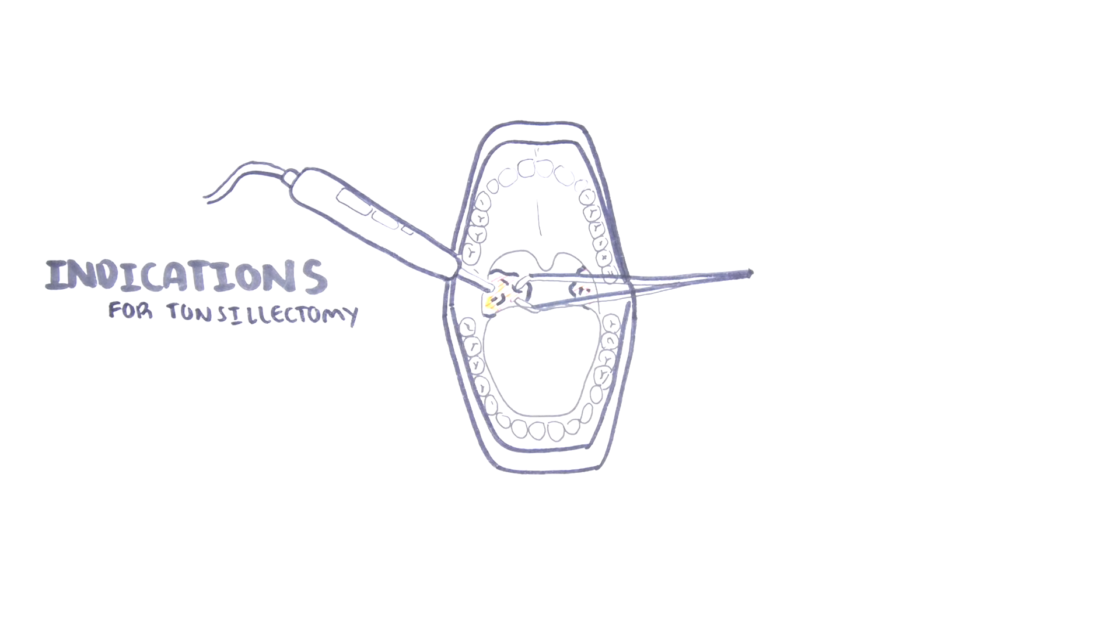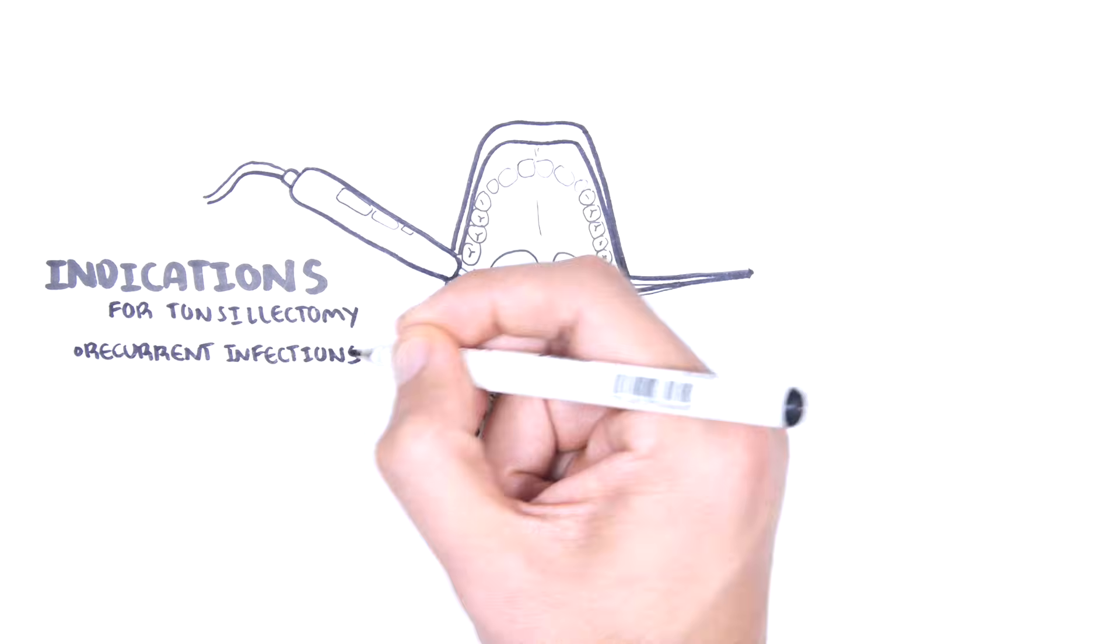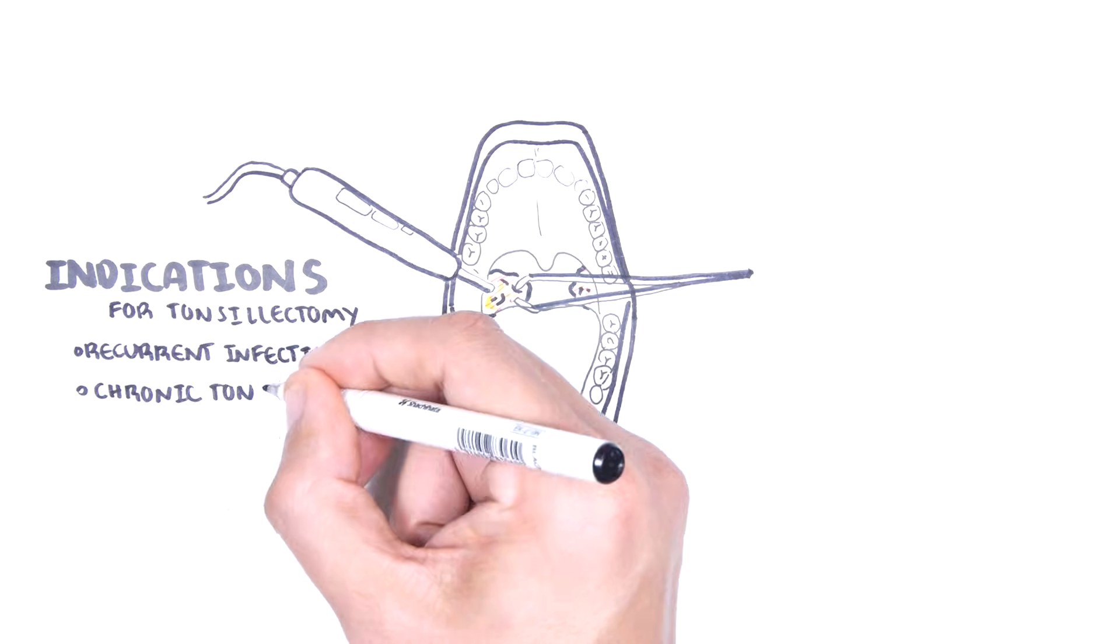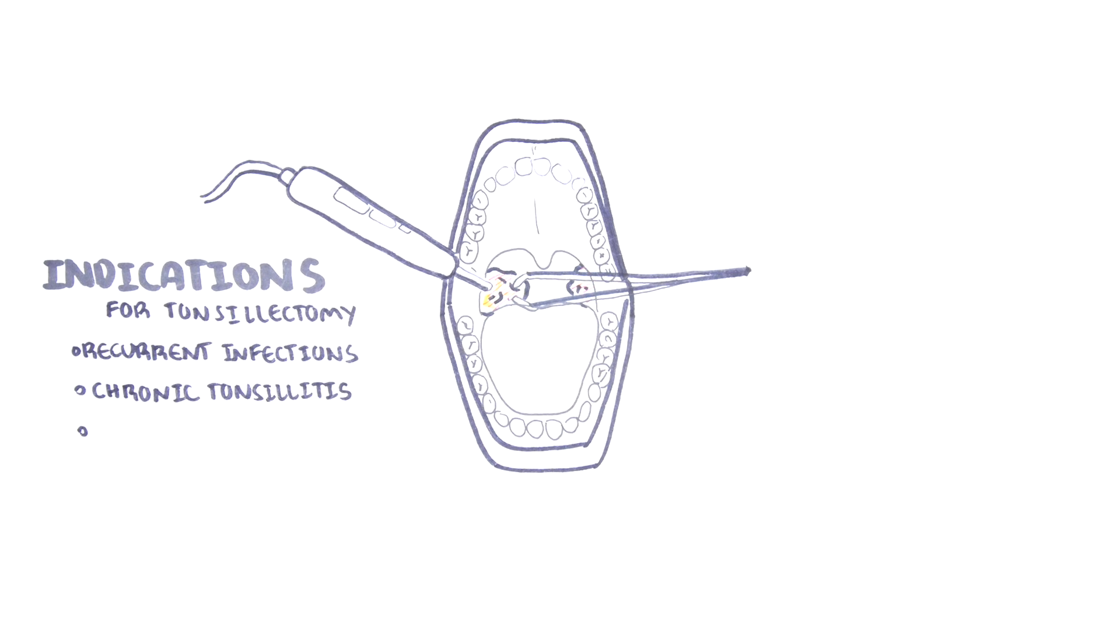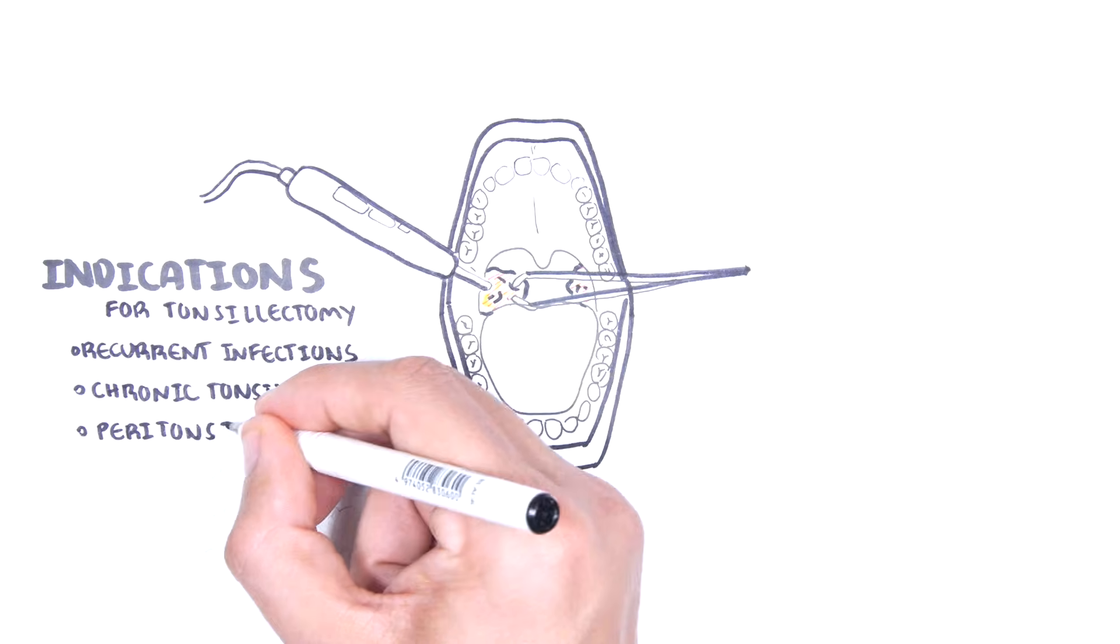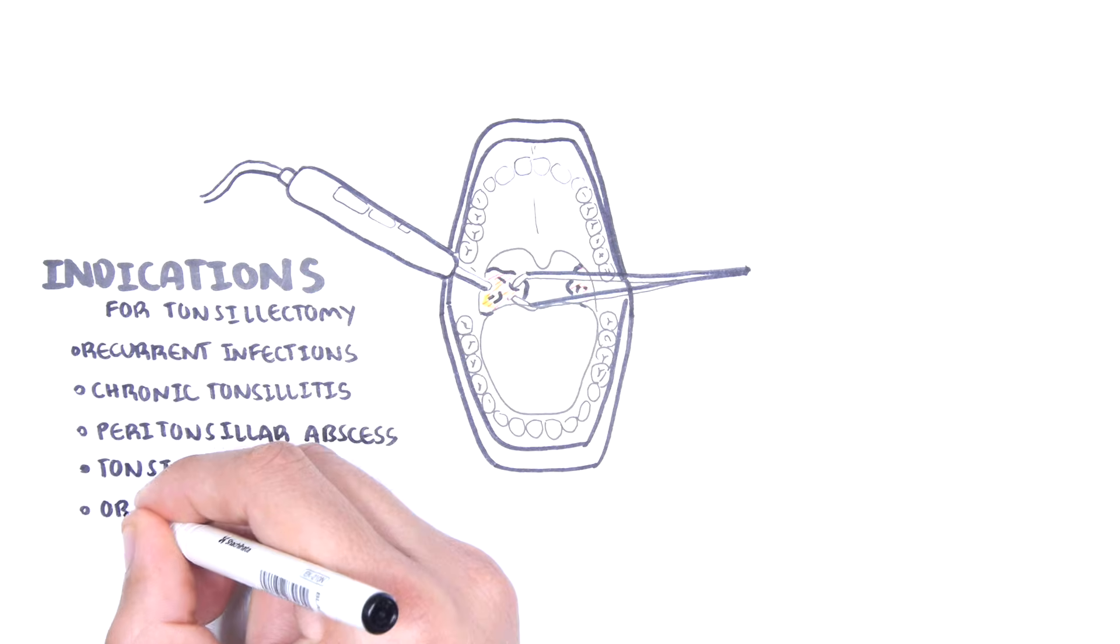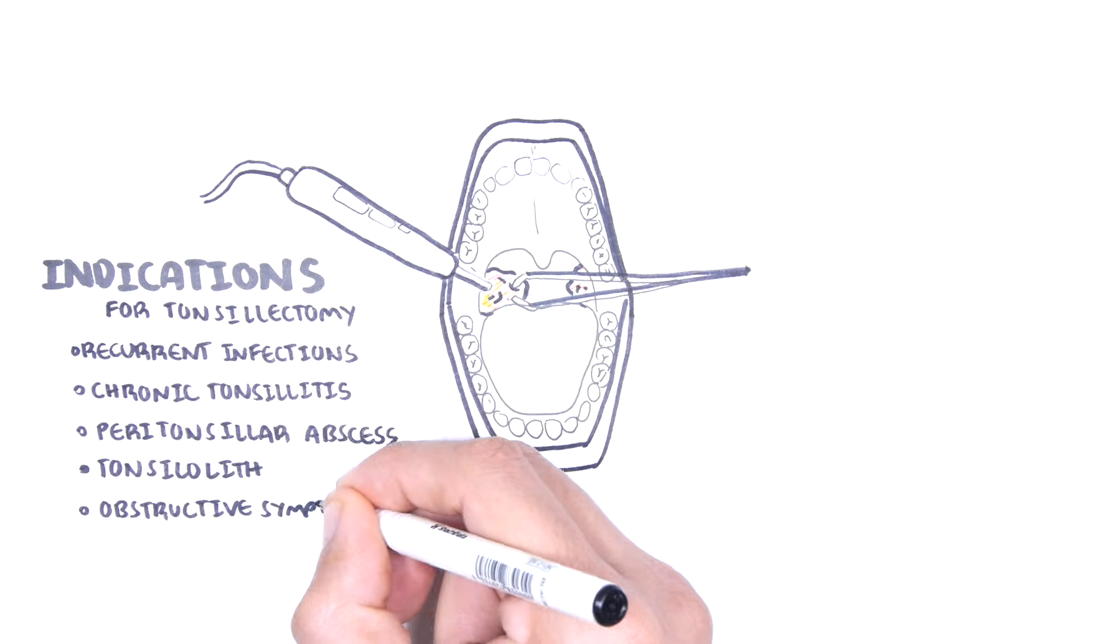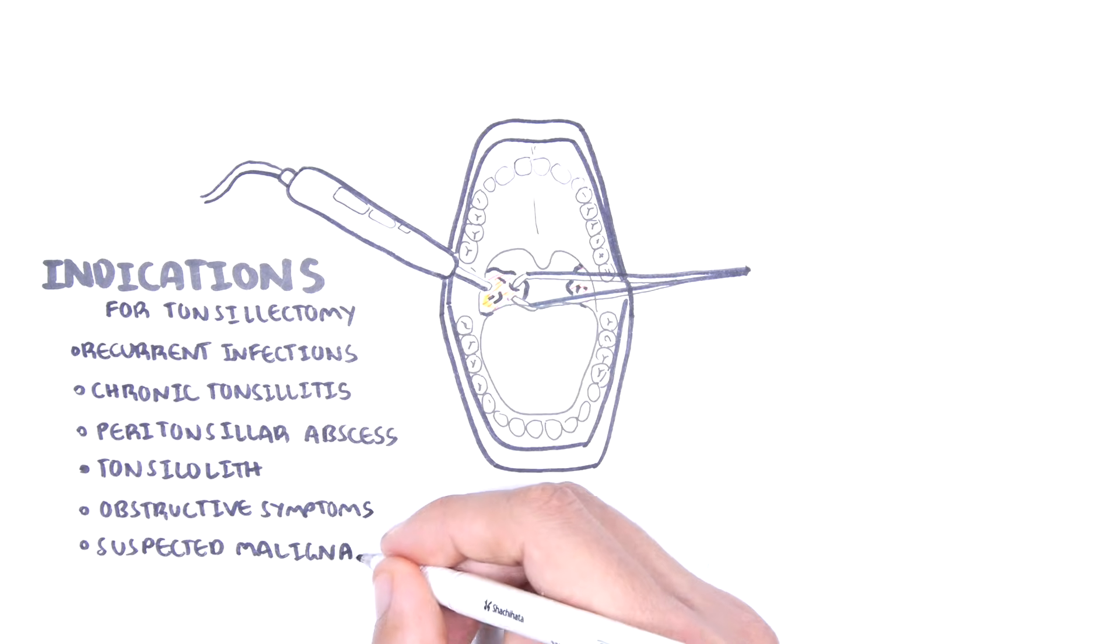The indications for tonsillectomy include recurrent tonsillitis, which means several attacks, I think six in one year, having chronic tonsillitis, having a peritonsillar abscess, tonsilloliths, which we mentioned earlier, having obstructive symptoms, tonsillitis which causes obstructive symptoms, such as from Epstein-Barr virus, for example, or something that will cause obstructive sleep apnea. And finally, a very important indication is suspected malignancy.